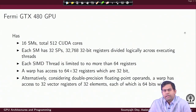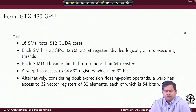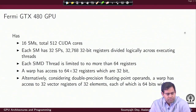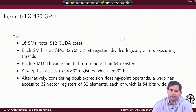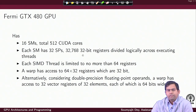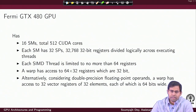Coming to the second architectural example — we move from Tesla to the Fermi family of NVIDIA architectures, which provided some new facilities in terms of processing. As a representative example, the Fermi GTX 480 GPU has 16 SMs which together can process 512 CUDA cores. So you have 512 CUDA cores inside 16 SMs, meaning each SM has 32 CUDA cores — 32 scalar processors — and 32,768 32-bit registers divided logically across the executing threads inside each SM.